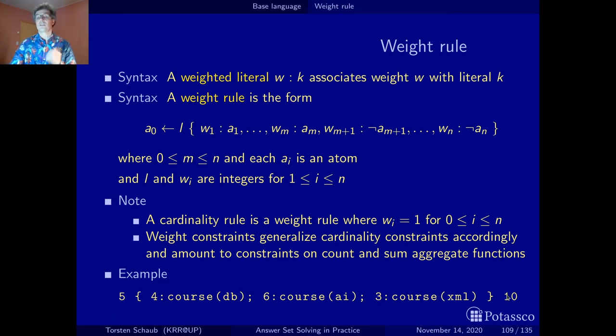What happens is depending on which courses we select, the corresponding literals are satisfied by the stable model and we get the corresponding weight. Let's assume we take databases and XML and we do not take AI. This means we get 3 and 4, this is 7, and this lies between 5 and 10. We are good; our weight constraint is satisfied.